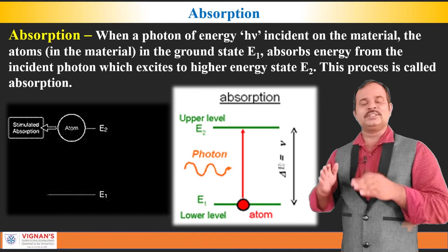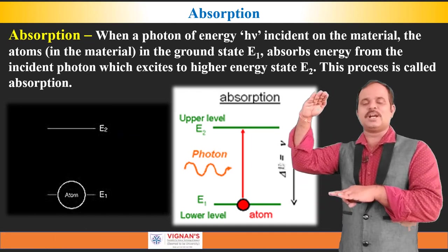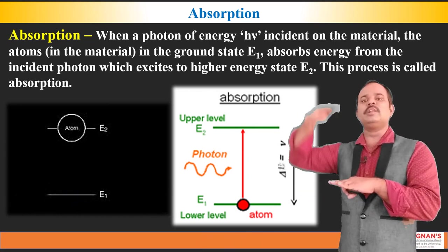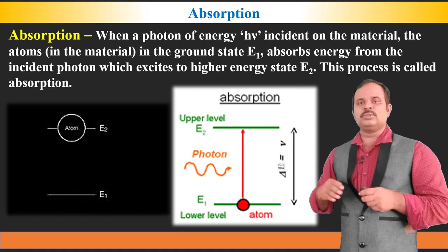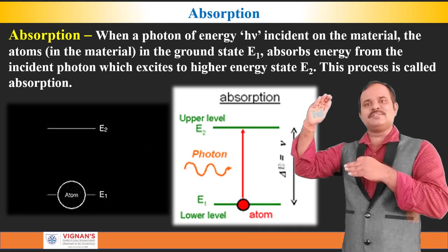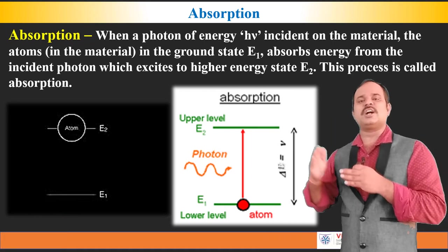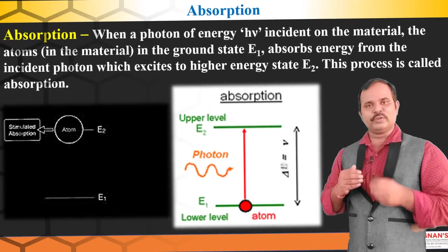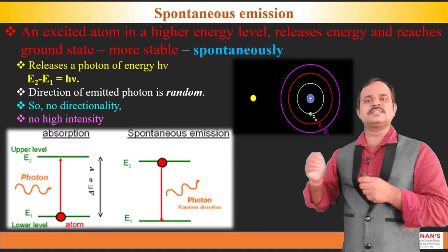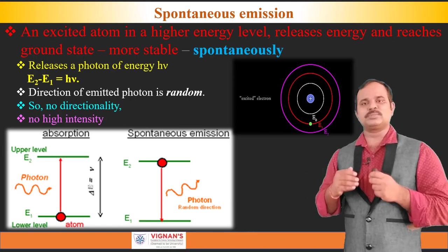In this process, initially the atoms are in the ground state and will be excited to a higher energy state. After the absorption process, the atom which absorbs the photon will be in a higher energy state. Now, after sufficient lifetime, the atom will be de-excited to the ground state. This process is called the emission process. We know that there are two types of emissions: one is spontaneous emission, another one is stimulated emission.